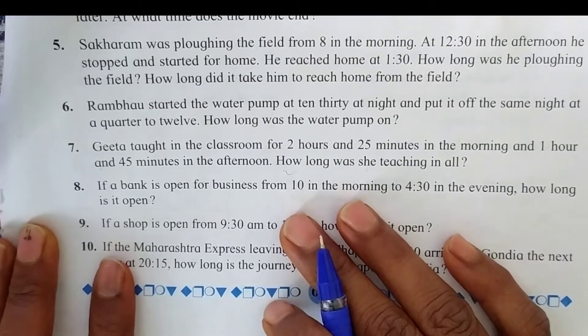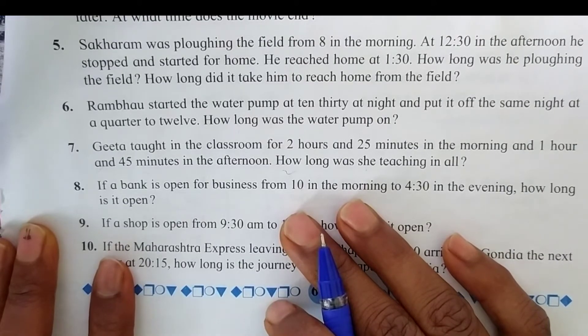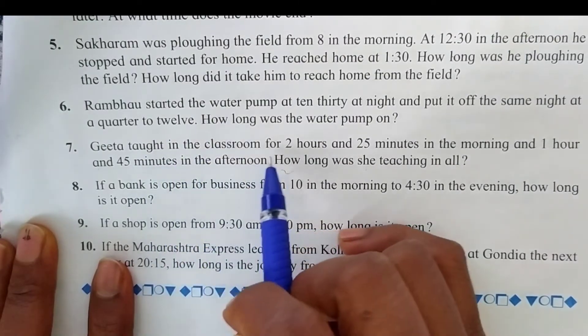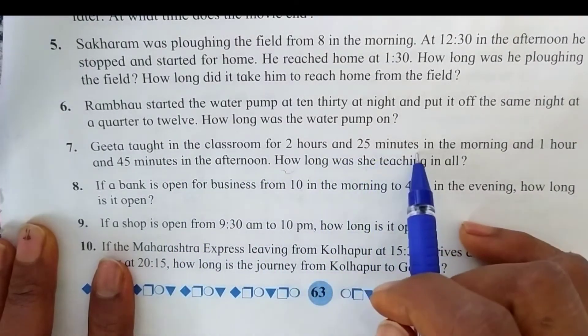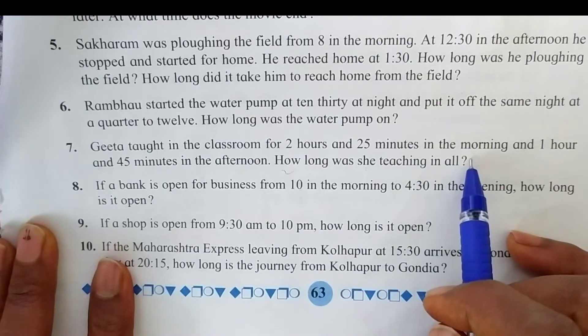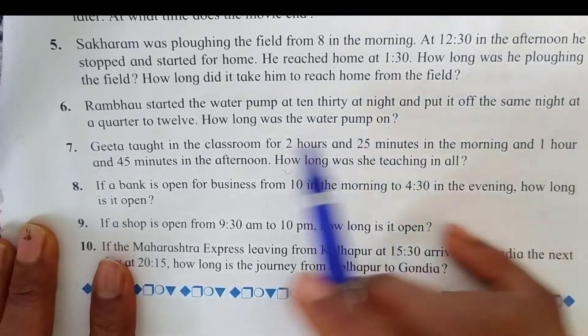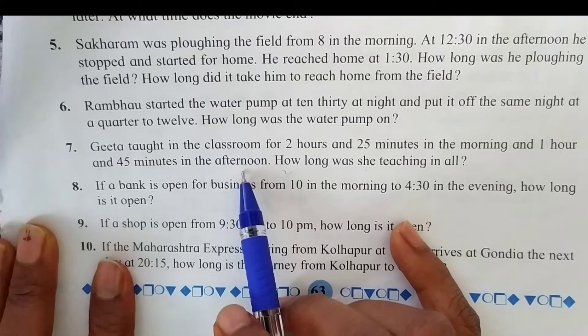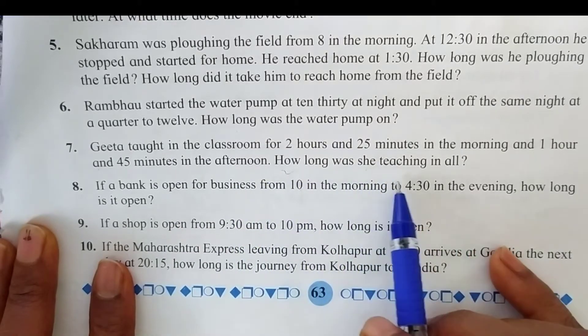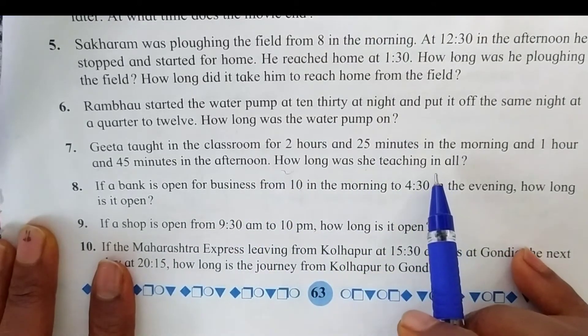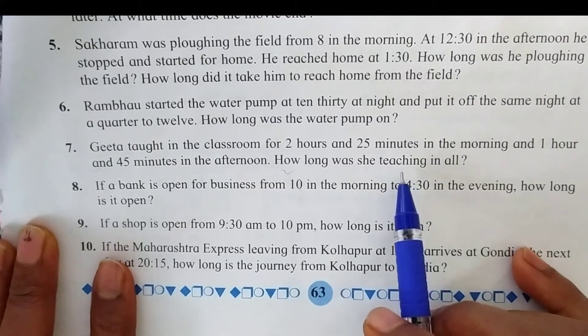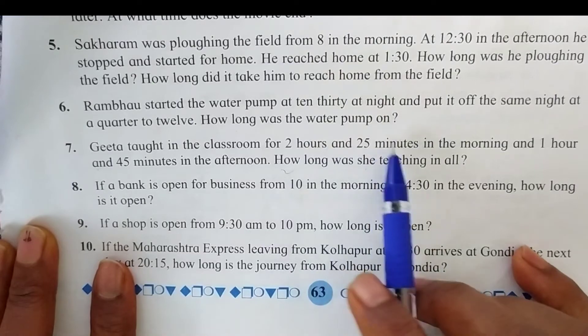Let's start to solve the questions. The seventh question is: Geeta taught in the classroom for 2 hours and 25 minutes in the morning and 1 hour and 45 minutes in the afternoon. How long was she teaching in all? To find out total teaching time, we have to add these given times.